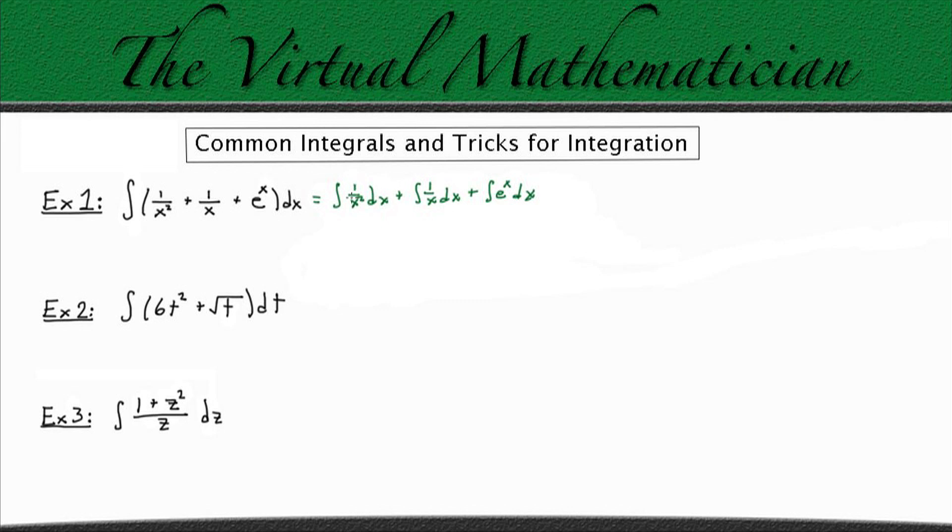Now all we have to do is evaluate each of these integrals separately. For this first one here, I want to take our function x squared and bring it up into the numerator so we can do a power rule. So I'm going to rewrite this as the integral of x to the minus 2 power dx.